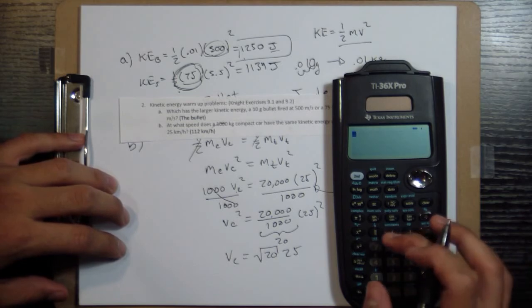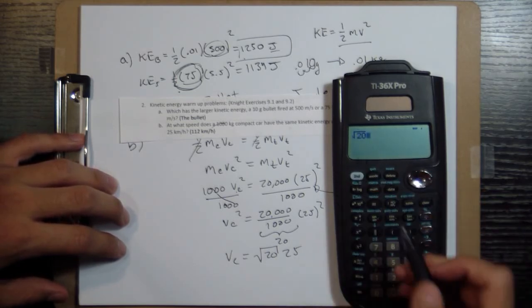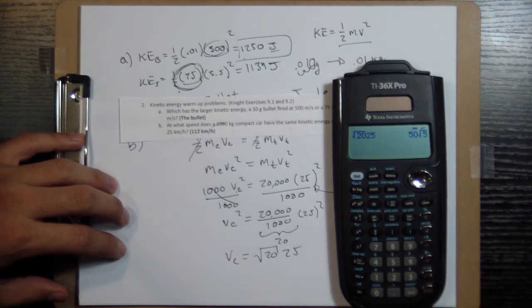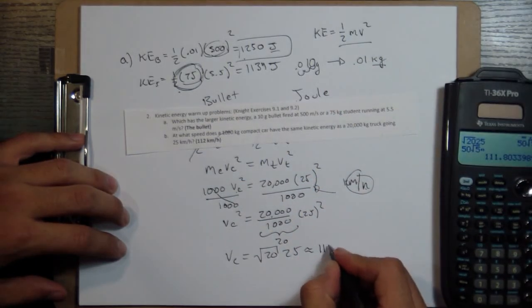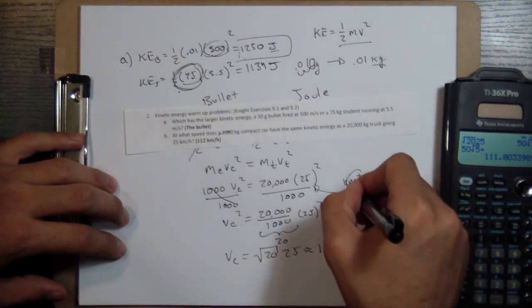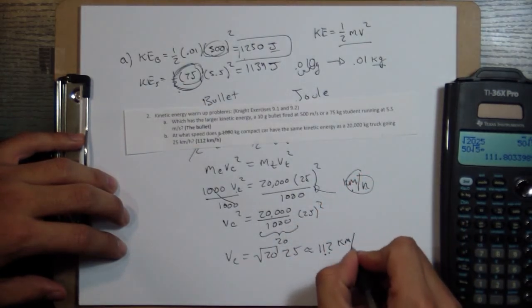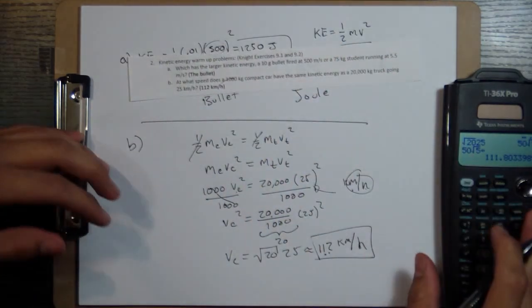Square root of 20 times 25. 111.8 rounds to 112. And this ends up being in the same units as we put in, which is kilometers per hour. All right, that's it.